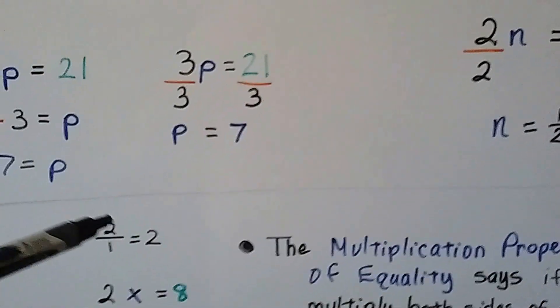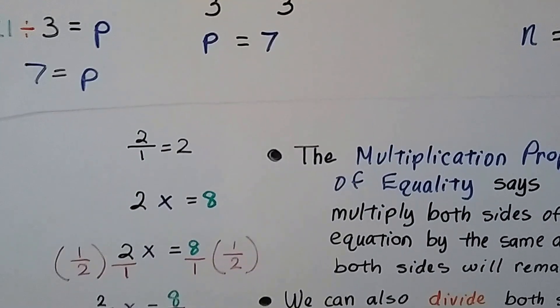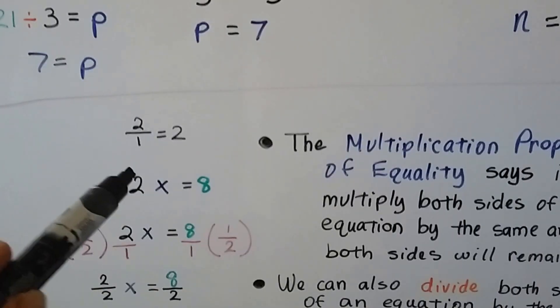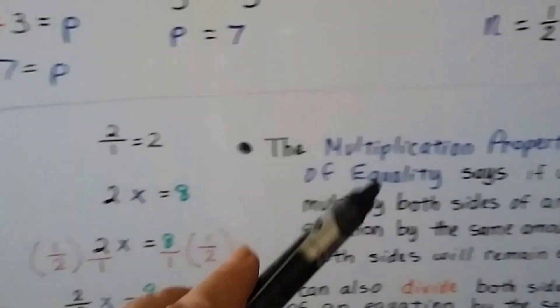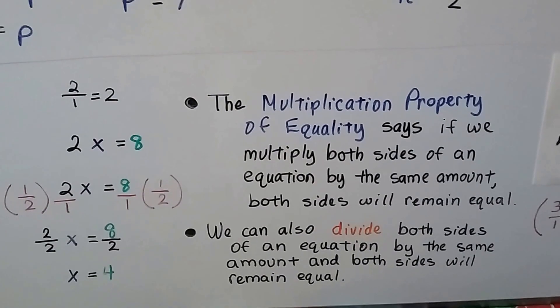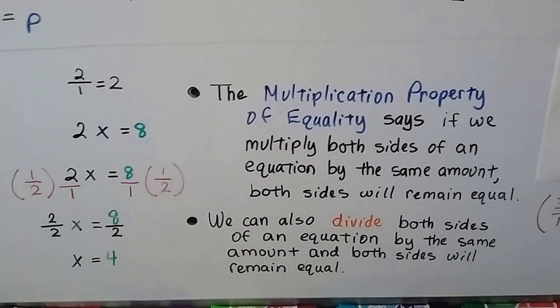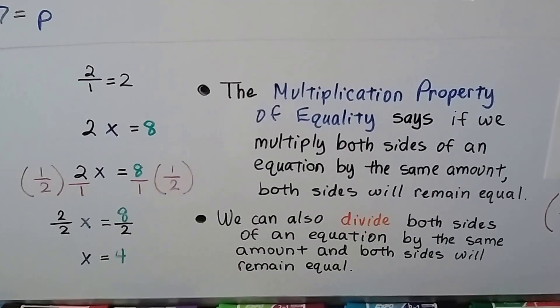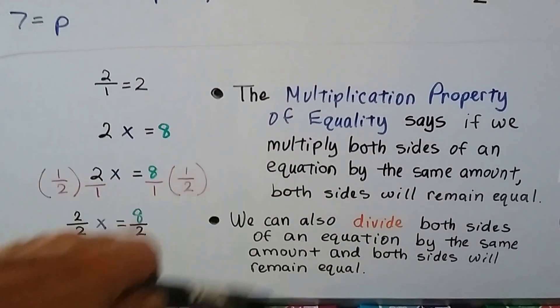Now we know that 2 over 1 represents 2. It's the same thing. So if we have 2x equals 8, we can use the multiplication property of equality, which says if we multiply both sides of an equation by the same amount, both sides will remain equal. They'll stay balanced.